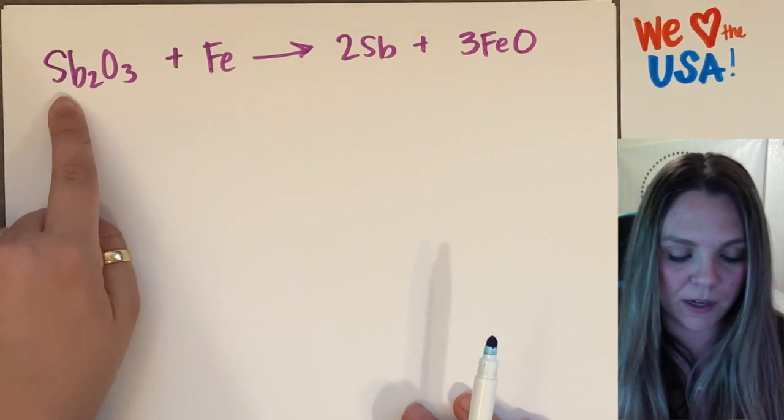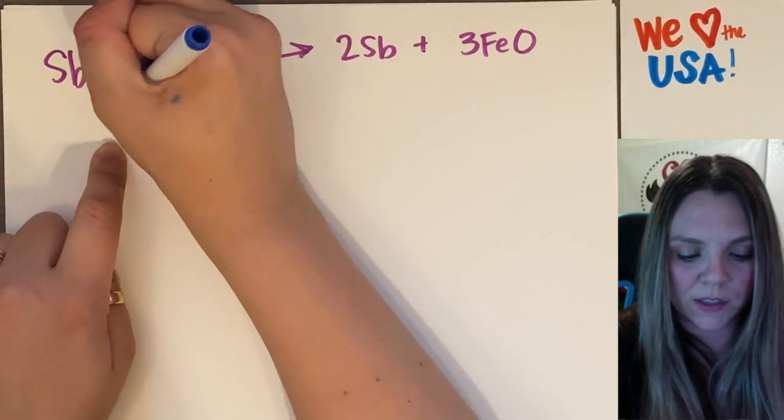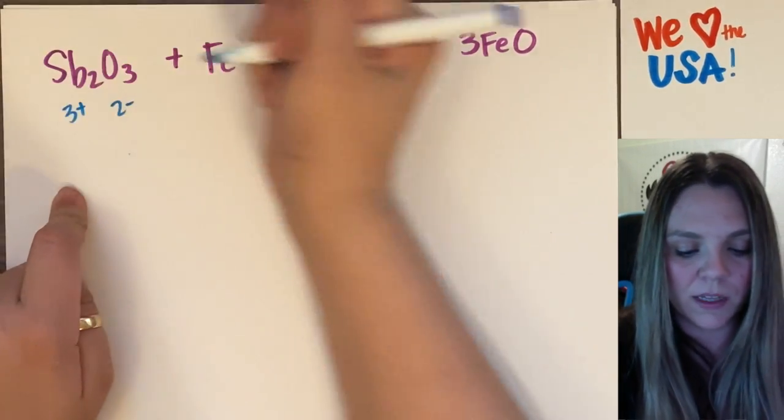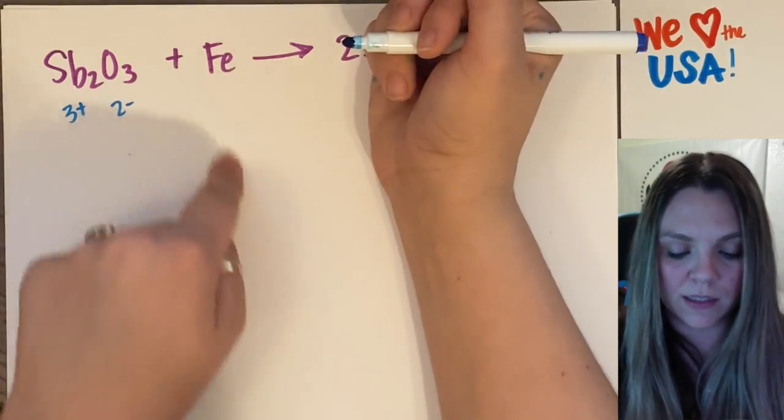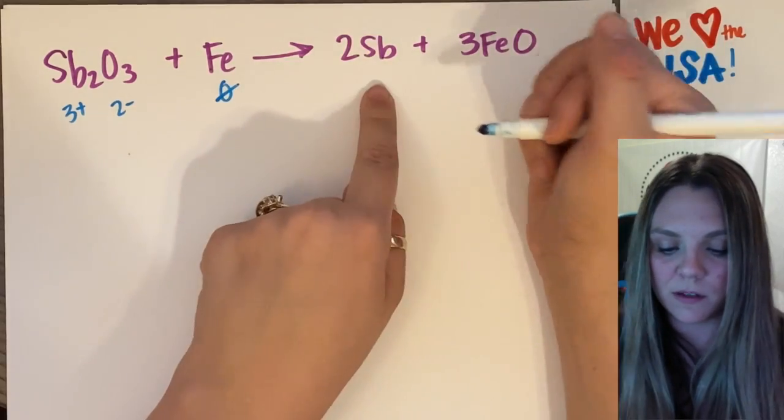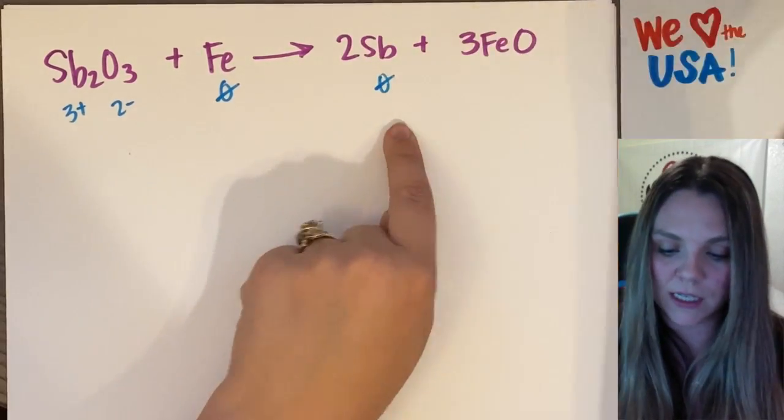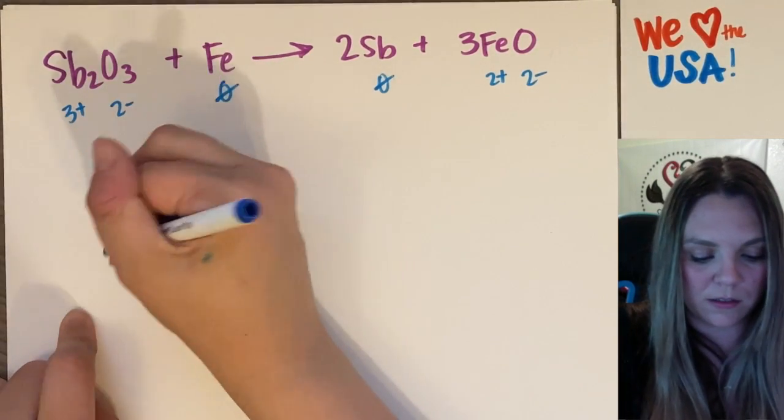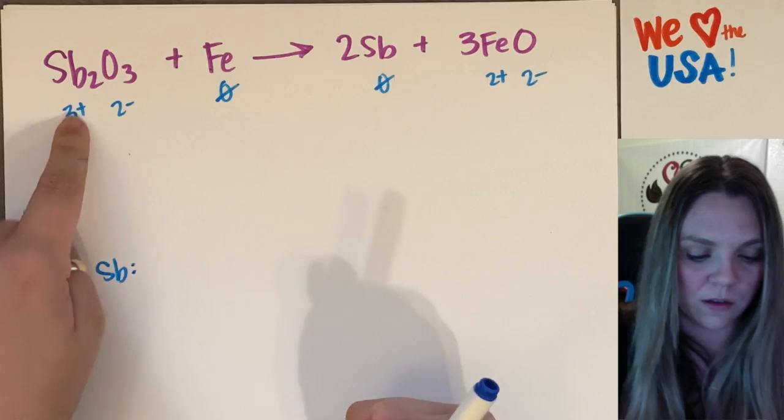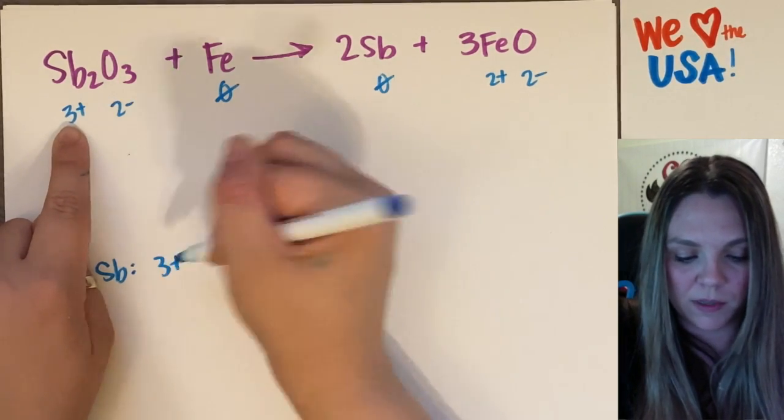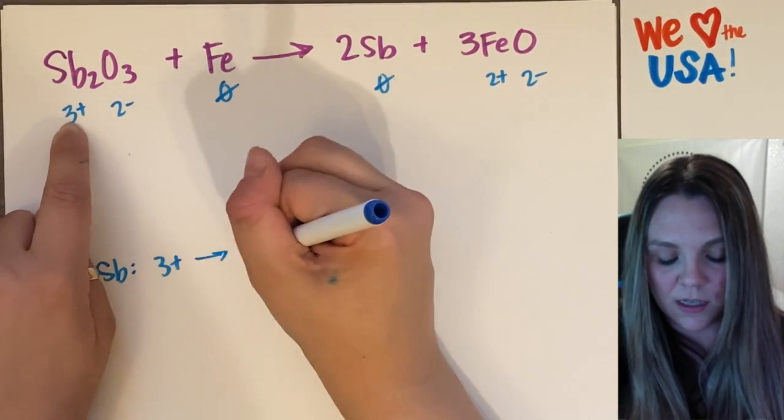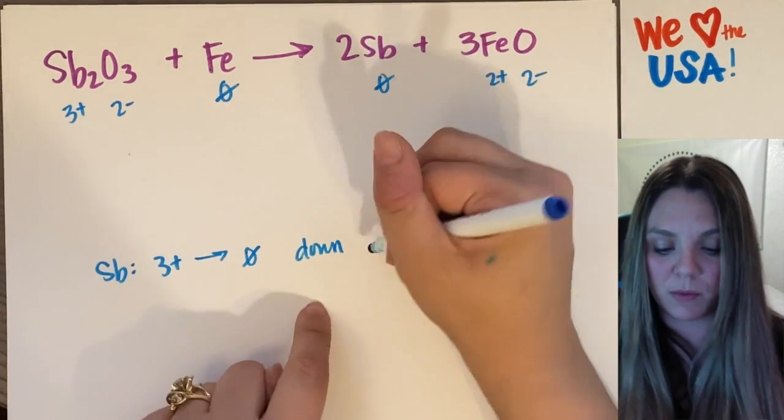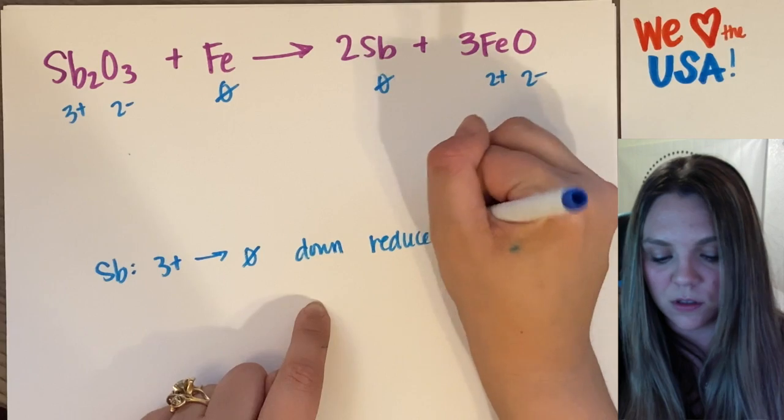Last example. Oxygen gets a two minus. So that's six minus. So this has to be three plus. Iron in its elemental state is zero. Oxygen is two minus. Iron is two plus. So we go from a three plus here down to a zero. This number went down. The number reduced.